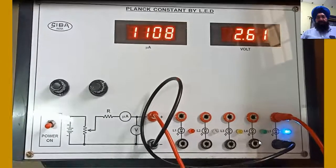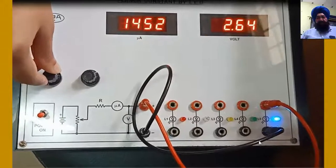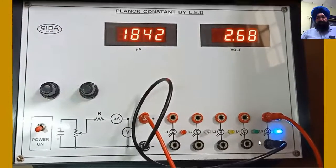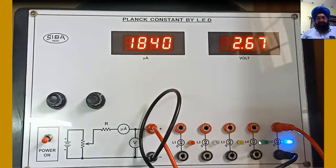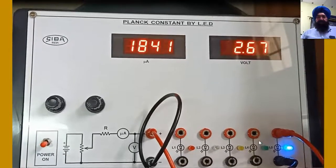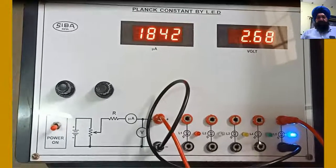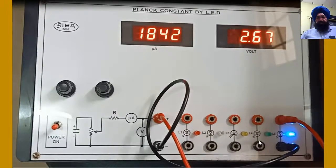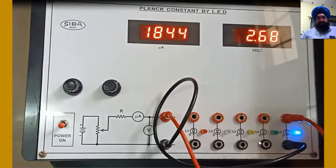You have to find that voltage after which current rises sharply but voltage change is very small. From that you can find Planck's constant. Thank you.